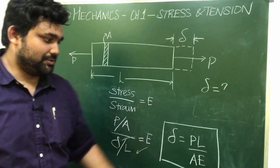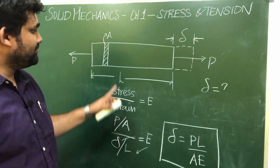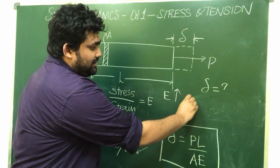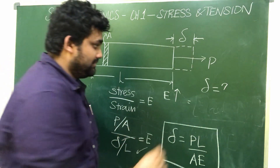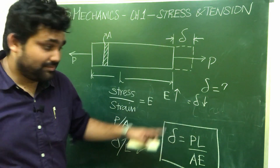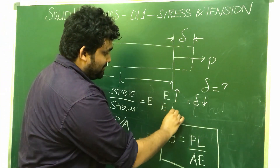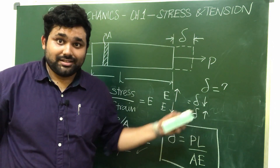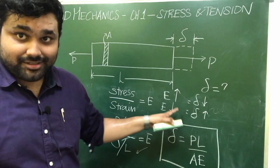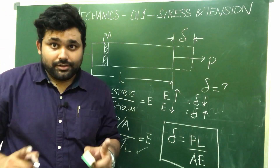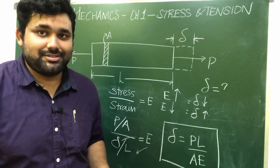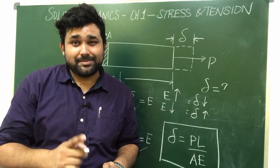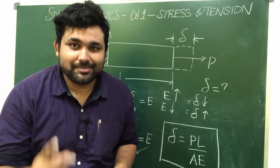Young's modulus E is in the denominator: if Young's modulus is more, then elongation is less. This is the material's ductile ability. Please like, share, and subscribe. Thank you.